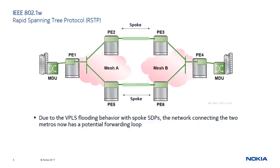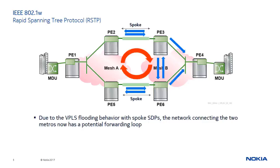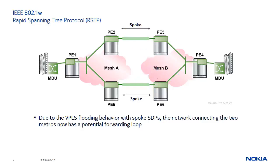Broadcast, unicast and multicast traffic arriving on the mesh A network are flooded on both spoke SDPs. Traffic arriving on the spoke SDP on router PE3 is then forwarded on the mesh SDPs towards routers PE4 and PE6 in mesh B. Traffic arriving on the mesh SDP on router PE6 is forwarded back to mesh A through the second spoke SDP. Similar behavior is observed for the traffic arriving on the spoke SDP on router PE6.